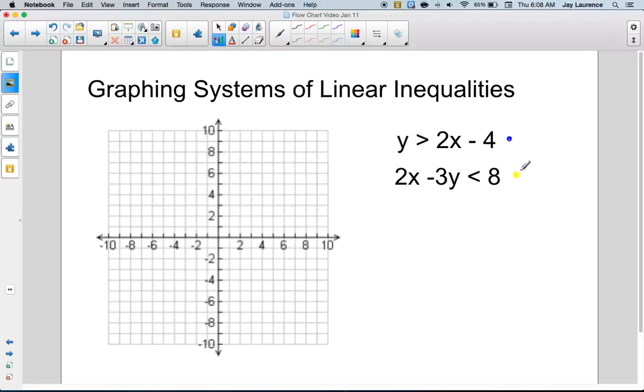All right, so let me graph this inequality. It says y is greater than 2x minus 4. Well, it's obviously in slope intercept form. So, I'm gonna put a point here at negative four. That's my y-intercept. And I'm gonna rise two and run one, and rise two and run one. And so, the line is gonna follow this path.